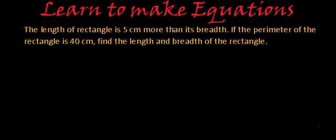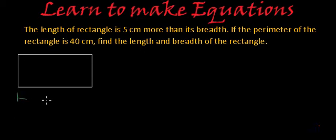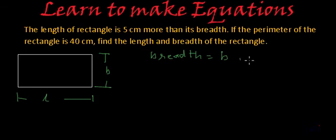Statement says the length of a rectangle is 5 centimeters more than its breadth. So suppose if we have a rectangle, this is the rectangle, and if we call this side, the longer side, as length or L, so this will be breadth which is B. And what they are saying? They are saying length is 5 centimeters more than its breadth. So if we assume breadth as B, then length will be 5 centimeters more than B. So it will be B plus 5.